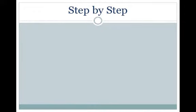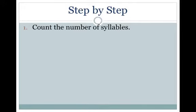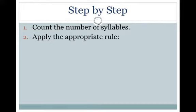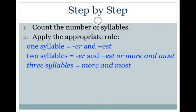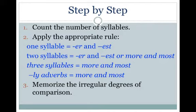Here's a step-by-step guide to figure out the degrees of comparison. First, count the number of syllables. Then apply the appropriate rule: one syllable — add ER and EST; two syllables — add ER and EST or more and most depending on the word; three syllables — use more and most; LY adverbs — use more and most. Finally, memorize the irregular degrees of comparison.